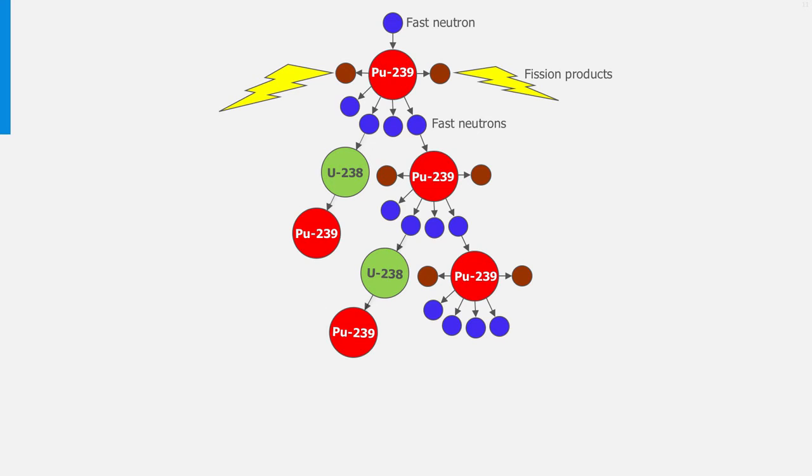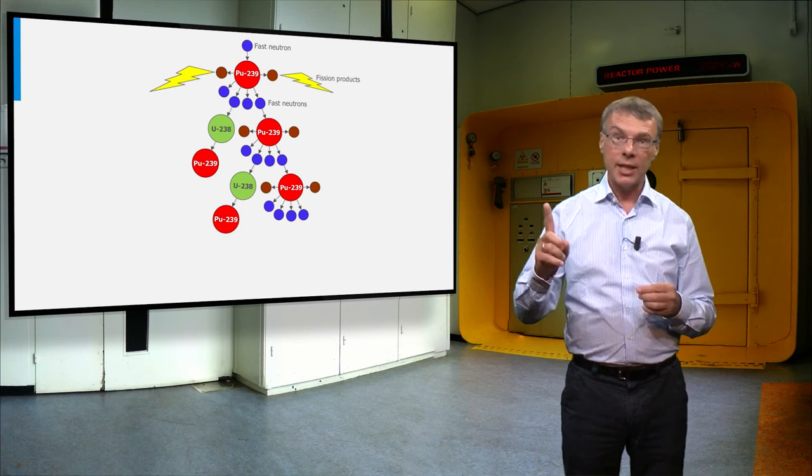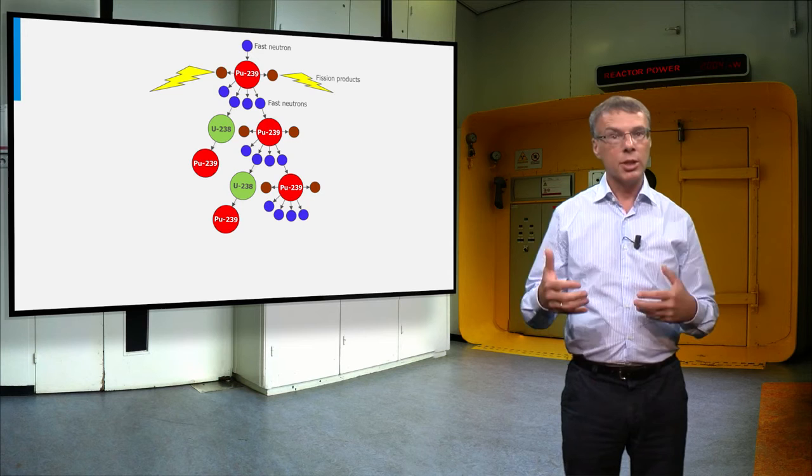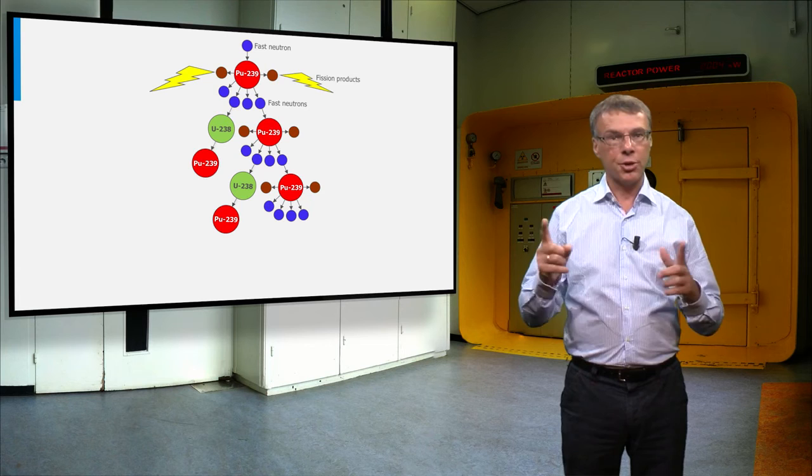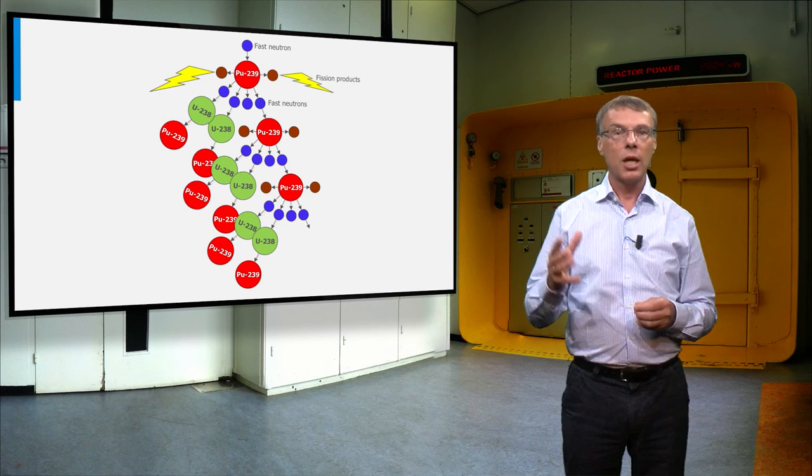Now imagine we would use plutonium-239 right from the beginning of reactor operation. In that case we have many more fission neutrons in each generation, and the possibility to breed more plutonium than we consume. We have then made a fast breeder reactor that produces more plutonium than it consumes.